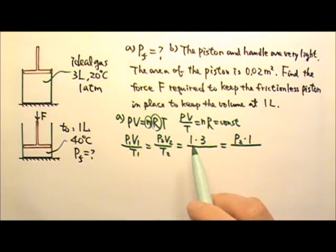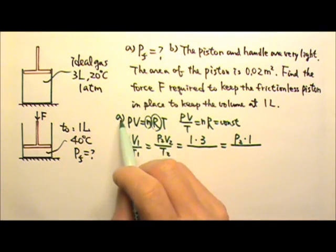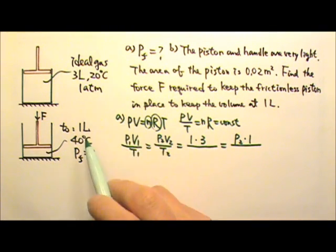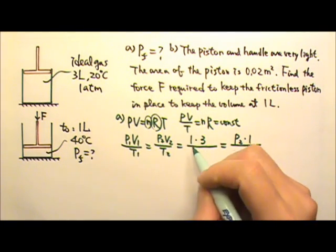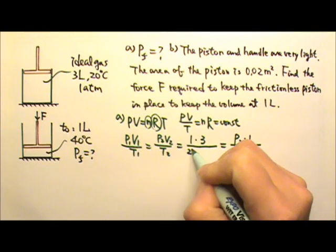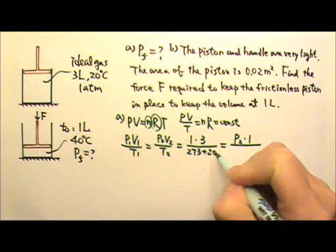The temperature though, we cannot just use degrees Celsius. When we use the ideal gas law, the temperature must be in Kelvins. So we have to change 20 degrees Celsius to 273 plus 20 Kelvin.